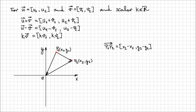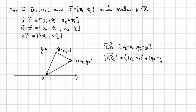Let's see how we express the magnitude of this vector. Just like before but using its coordinates, the magnitude of p1p2 is equal to the square root of (x2 − x1)² plus (y2 − y1)².